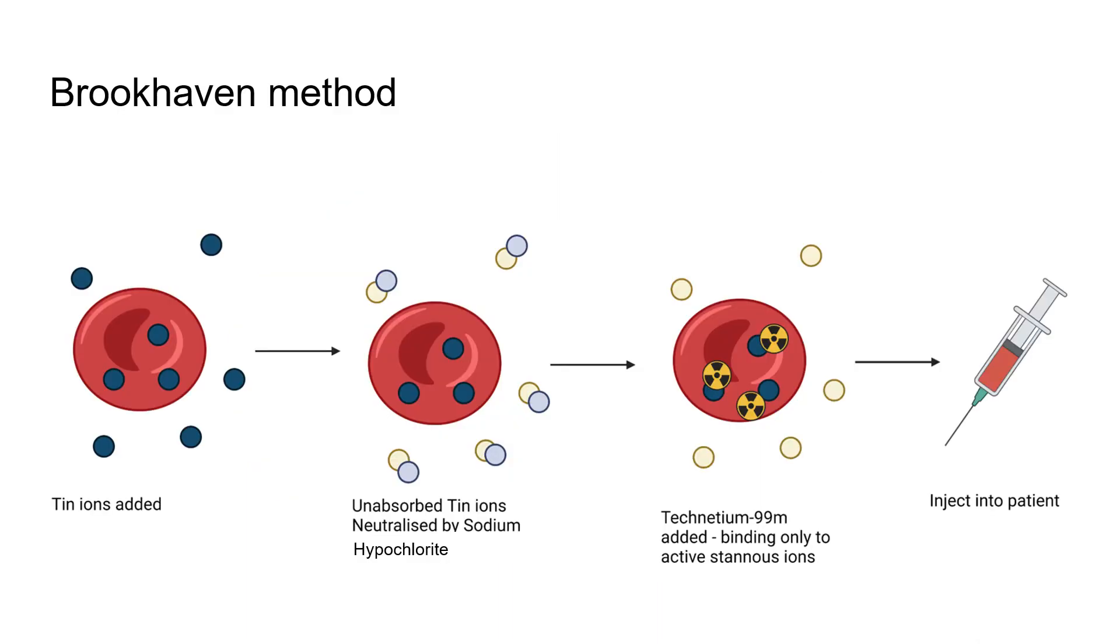The first method is the Brookhaven method and indeed you also have kits on the market that have all of the consumables you need to label for this method. You would add the tin ions, unabsorbed tin ions will be neutralized by sodium hypochlorite in the next step so they are reduced and don't work anymore. Then you add your technetium and only the useful tin ions inside the red blood cells reduce your technetium and then you can inject this into the patient.